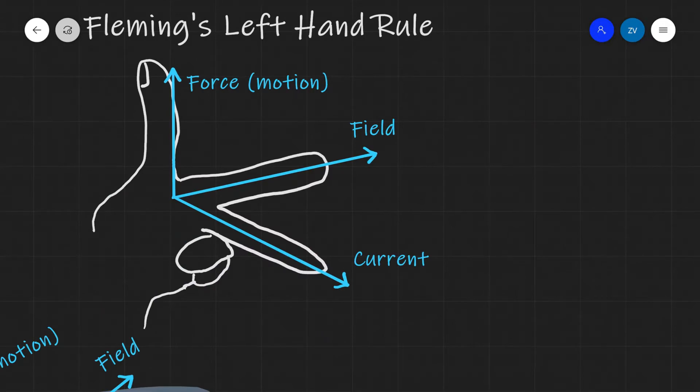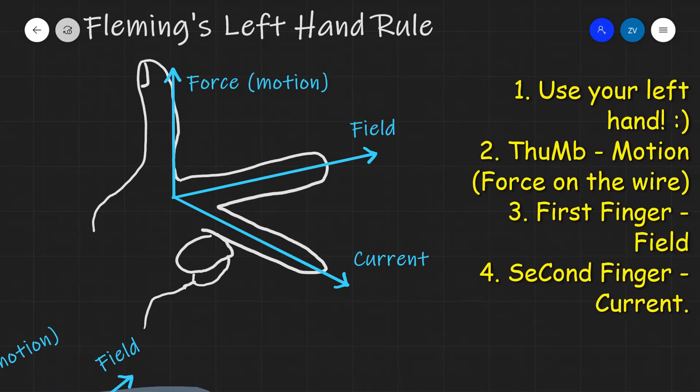Fleming's left-hand rule says that if we take our left hand—our first step is really important, we need to be using our left hand. We're going to get opposite results if we use our right hand.